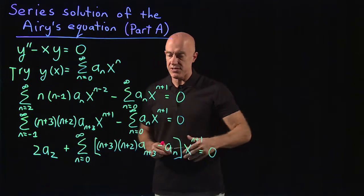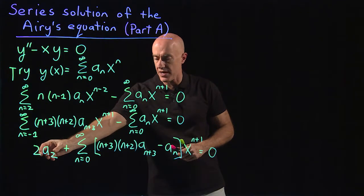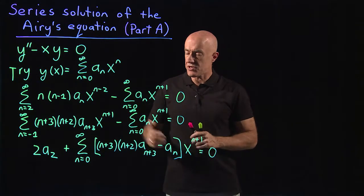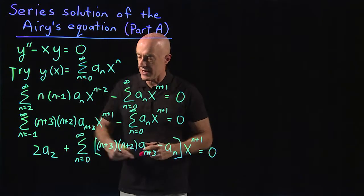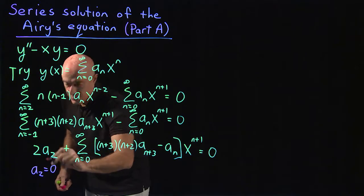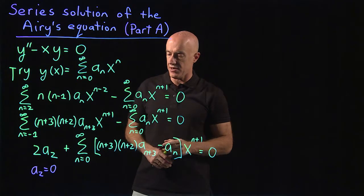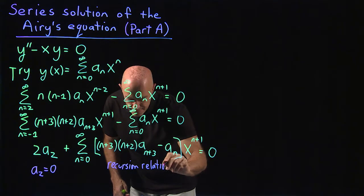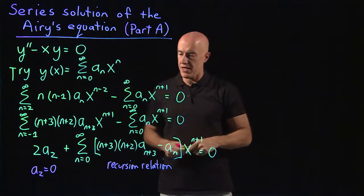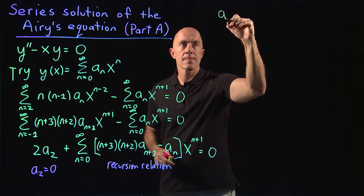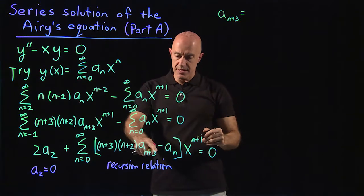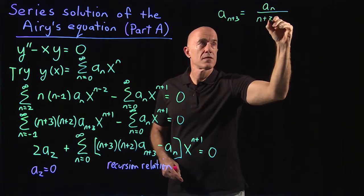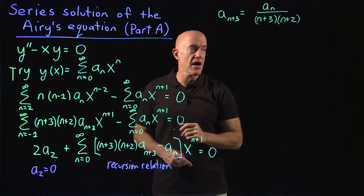Now we have a single power series with the constant term out front, followed by the x, x squared, x cubed terms, etc. Each coefficient must be zero. The constant term tells us a sub two equals zero. The remaining terms give us the recursion relation: a sub (n plus three) equals a sub n divided by (n plus three)(n plus two).